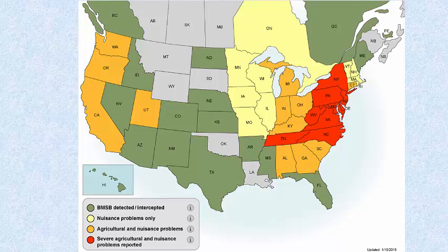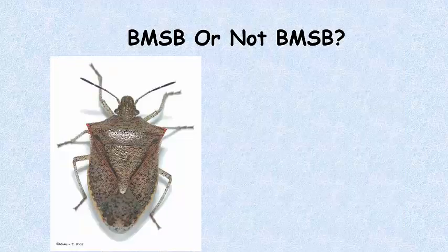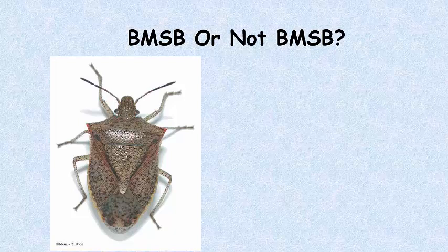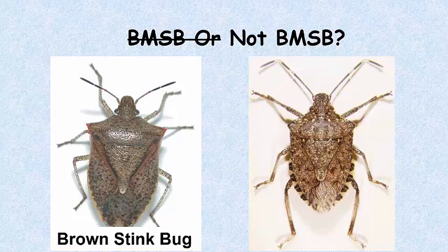A national map shows red states where crop loss has occurred — the brown marmorated stink bug feeds on sap from various crops, ruining the saleability of apples, tomatoes, sweet corn, and others. Iowa is a yellow state where it has been found in people's homes but not yet confirmed as a crop pest. Another quiz: the insect on the left is the brown stink bug (one-spotted stink bug), which has dark antennae with no light-colored bands and sharply pointed thorax projections, distinguishing it from the brown marmorated stink bug on the right.